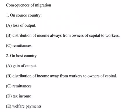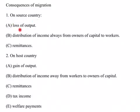Now let us examine the consequences of international labor migration on the source country as well as on the host country. When workers leave the source country, there will be a loss of output because the number of workers present has reduced, and when there is a loss of output there is also a loss in income. So in the source country, when fully able workers migrate — whether low-skilled, unskilled, or skilled — there is a loss of output or income. When these workers come to the host country they contribute to the economy, resulting in a gain of output and income for the host country.